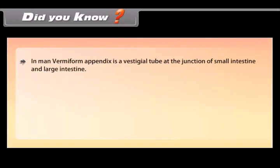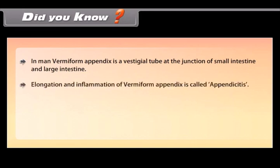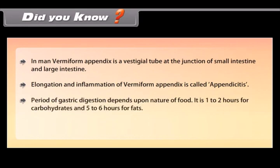In man, the vermiform appendix is a vestigial tube at the junction of the small intestine and large intestine. Elongation and inflammation of the vermiform appendix is called appendicitis. The period of gastric digestion depends upon the nature of food — it is 1 to 2 hours for carbohydrates and 5 to 6 hours for fats.